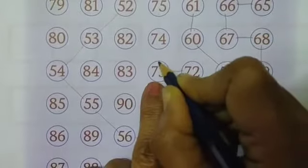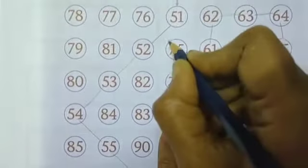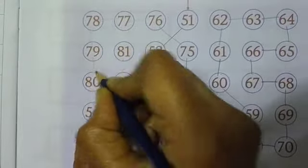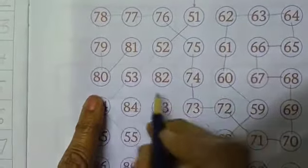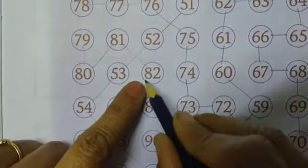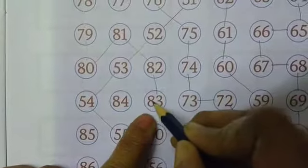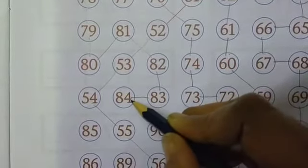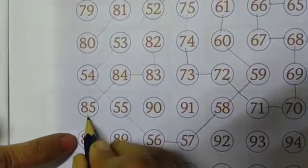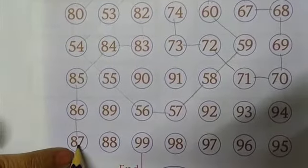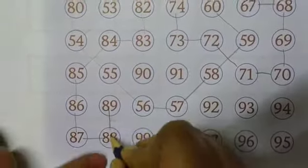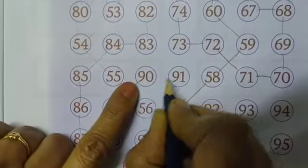80, 81. Where is 82? Here, 82, 83. Down 83, then 84, 85. Where is 85? Here. After 85, down 86. 87. After 87, 88. After 88, 89. After 89, 90, 91.